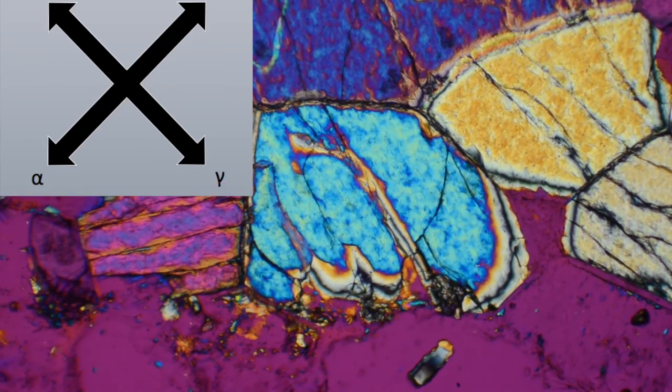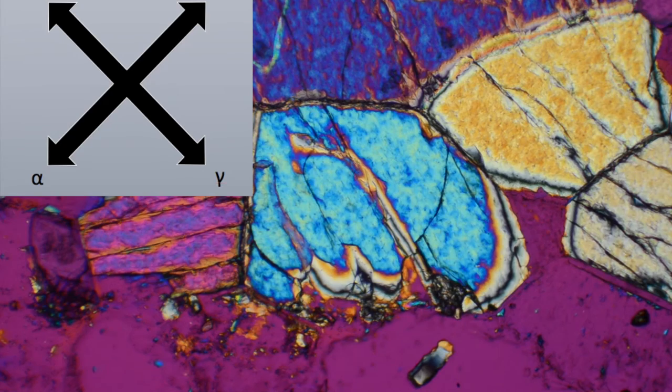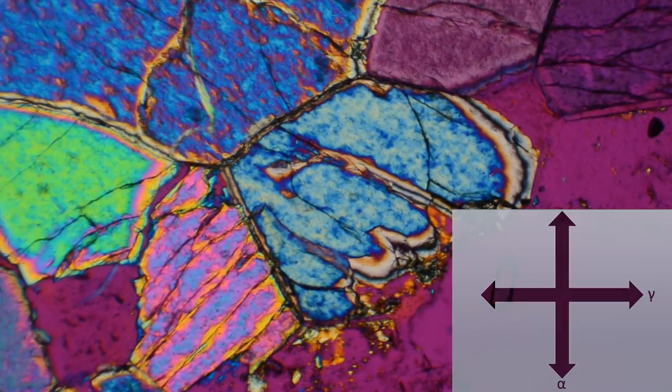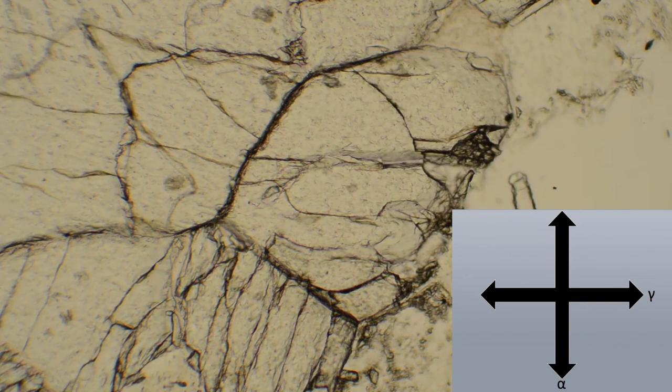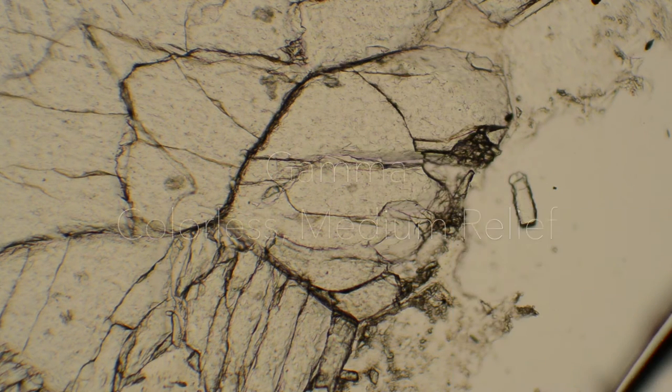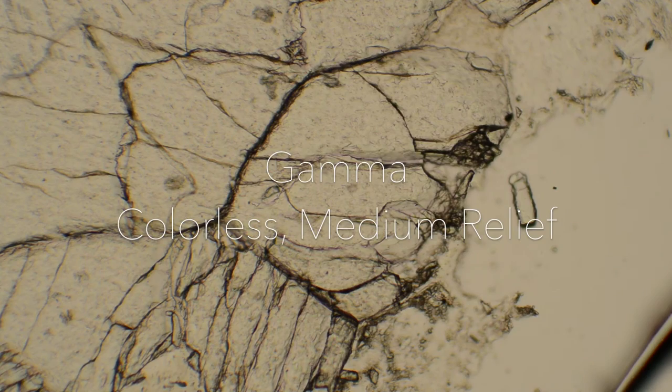In order to align gamma with the lower polarizer, I rotate my stage 45 degrees counterclockwise to the extinction position, then I take out my accessory plate and my cross polarizer. And without moving the stage, I can characterize my grain along gamma in plain polarized light. Here it is colorless with medium relief.